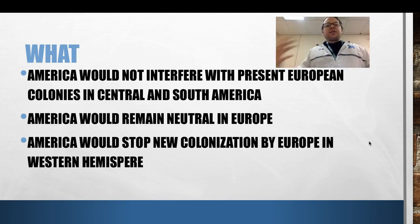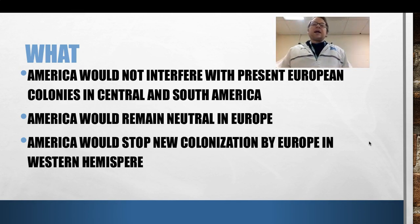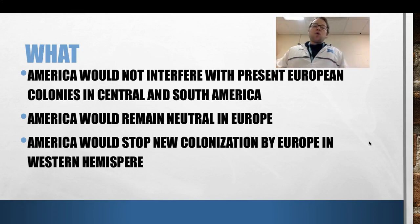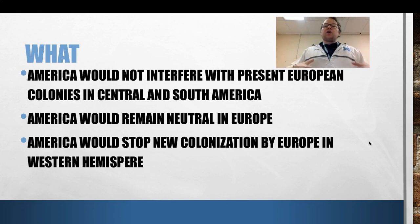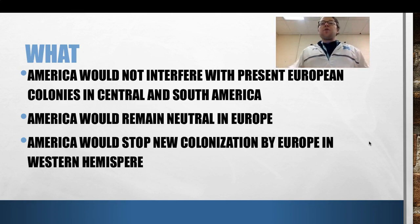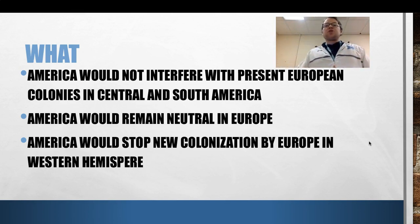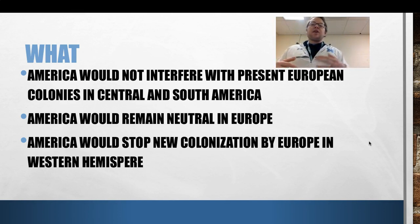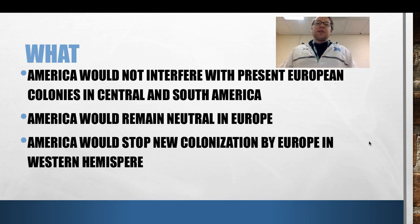Basically, what the Monroe Doctrine says is, number one, America is not going to interfere with two things. Number one, we're not going to interfere with colonies that Europe already has. So Spain, you have a colony in Peru — America is not going to come and mess with that. Portugal, you have a colony in Brazil — America is not going to come and mess with that. France, you have a colony in Haiti — America is not going to come and mess with that.